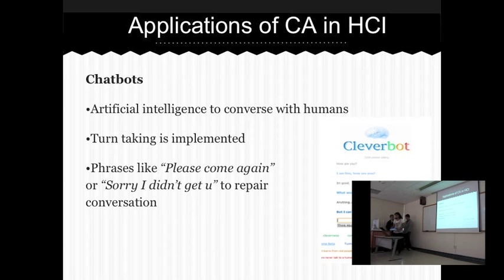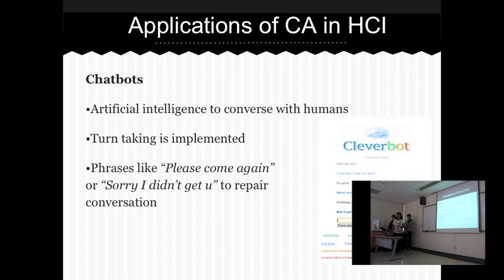Let's look at the applications of conversation analysis. The first example is the chatbot Cleverbot — an application that uses artificial intelligence to converse with humans. The system takes in the user input, scans all the keywords and exact phrases in its database, and matches it with the user input after transcribing and analyzing it, then responds in a way similar to how a human would. Turn-taking is in place here: once you enter a question, the text field is disabled until the system responds, ensuring turns are maintained. Customer service dialogue boxes also say things like 'please come again' or 'sorry, I didn't get you' in order to repair the conversation.